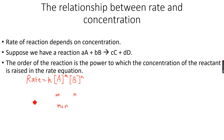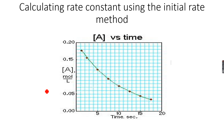Now you know the definition of order — this is very important because they often ask you to write these definitions. So now we can move on to calculating the rate constant using the initial rate method. The rate constant is K, as mentioned in the last slide.